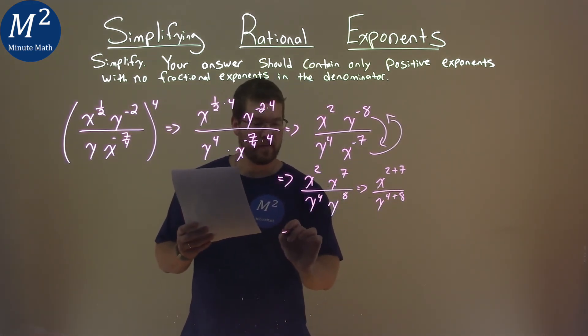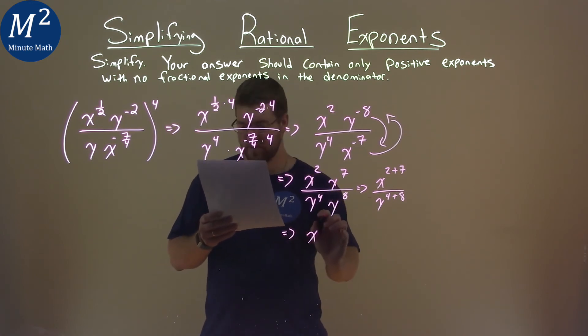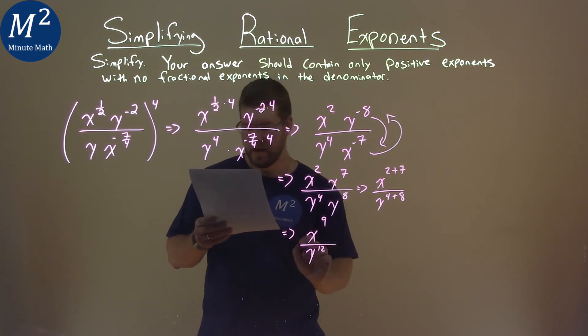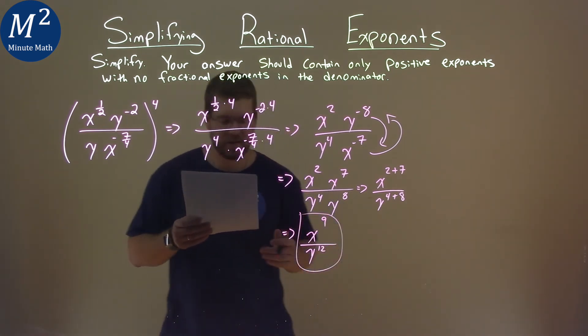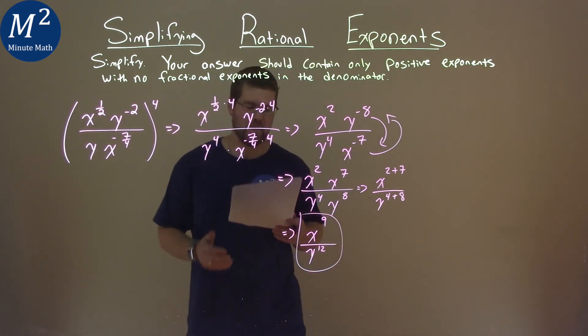So our final answer, if I write it out here, is just x to the 2 plus 7 is a 9, and 4 plus 8 is 12, so y to the 12th. And so our final answer is x to the 9th over y to the 12th power.